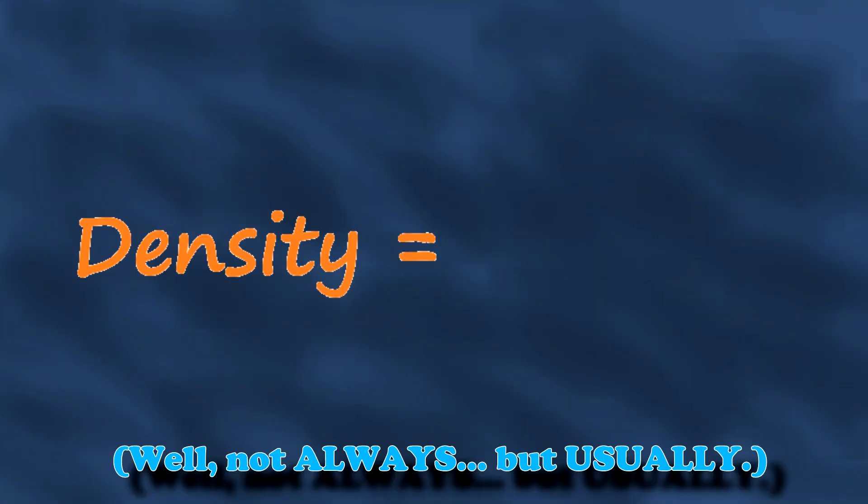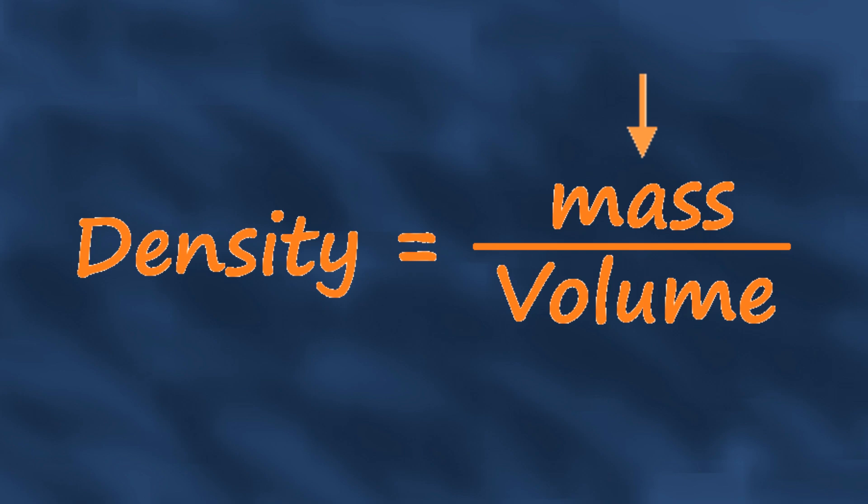Density is always given as a mass per volume, where mass measures how much stuff is there, and volume is how much space that stuff takes up. So it sort of measures how well a substance takes up as little space as possible. Now, density can vary a little bit with temperature. So the examples I'm about to give you are at room temperature.